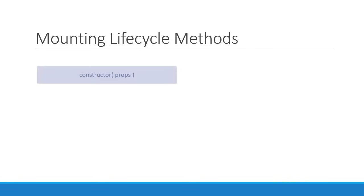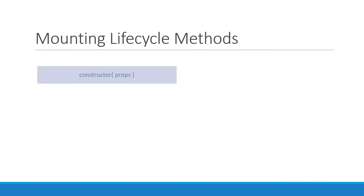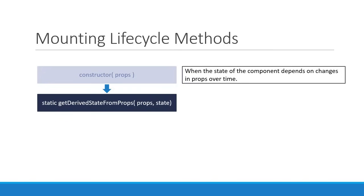The second method we have is a static method: getDerivedStateFromProps. The React documentation classifies this as a rarely used lifecycle method. It is basically used when the state of the component depends on changes in props over time. So if you have a component where the initial state depends on the props being passed to the component, you can use this method to set the state.